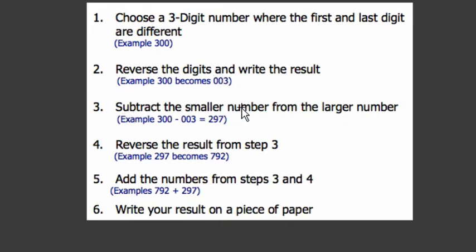Then you want to subtract the smaller number from the large number. Whichever is smaller of your two, subtract it from the larger. I get 297. But if you get something like 99, make sure you write 99 as 099. You want to include that leading zero.